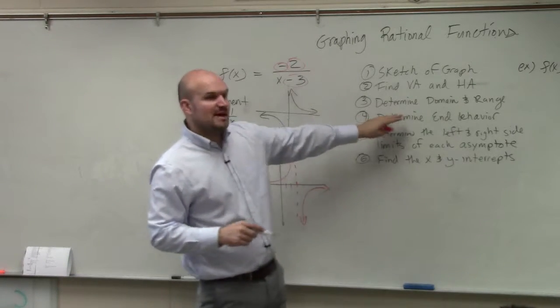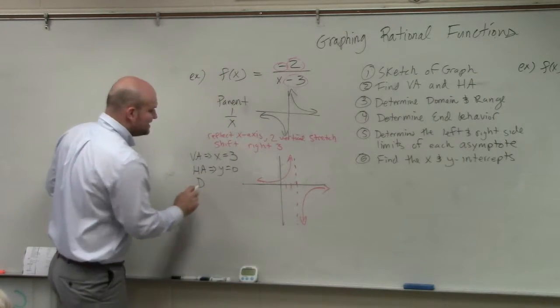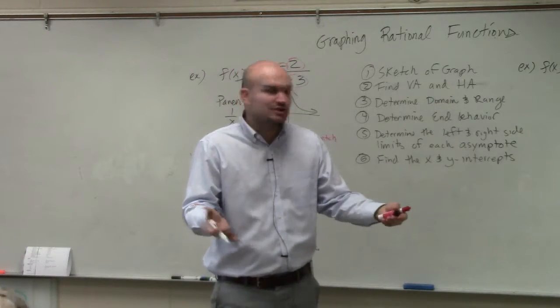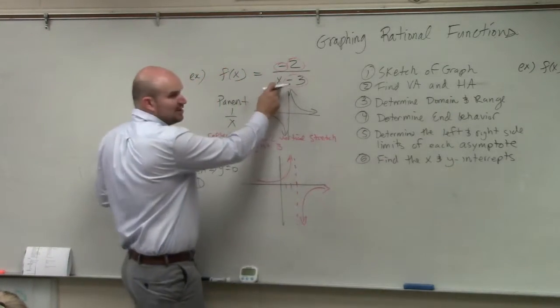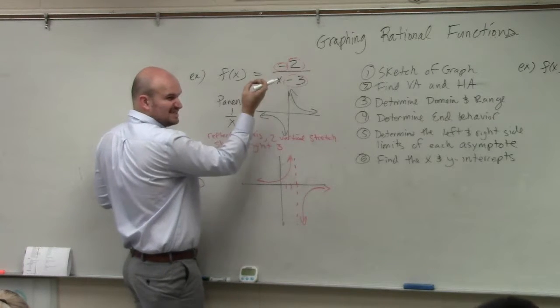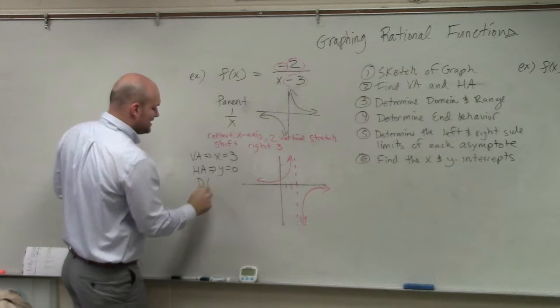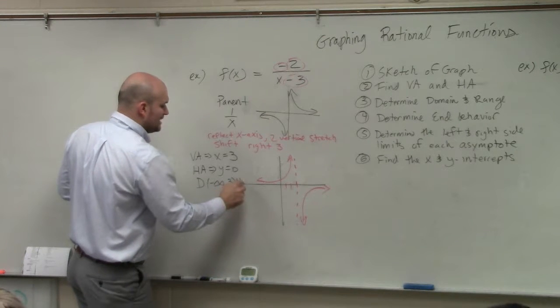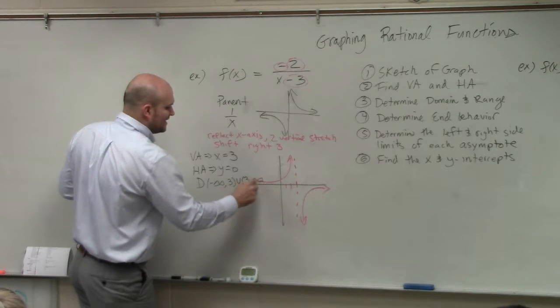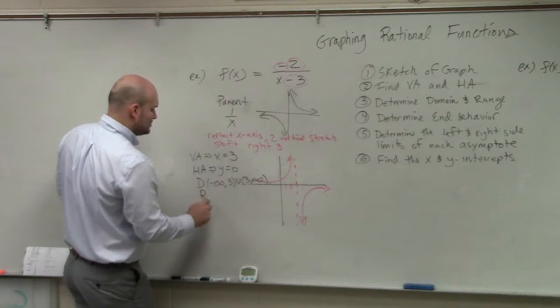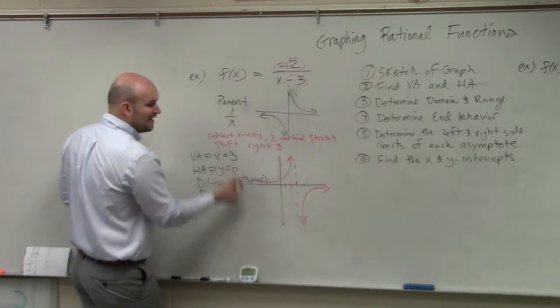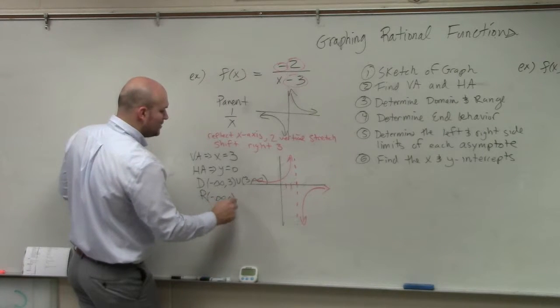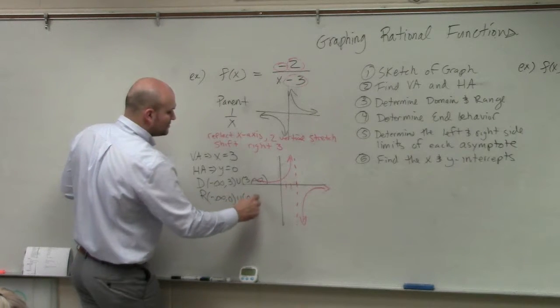Next thing it says, determine the domain and range. The domain is the set of all x values, except for the value where it's not true, which we know that you can't plug 3 into the denominator, because you'll get 0. So therefore, my domain is from negative infinity to 3, union 3 to infinity. My range is going to be all the y values, except where there's that y asymptote. So that's from negative infinity to 0, union 0 to infinity.